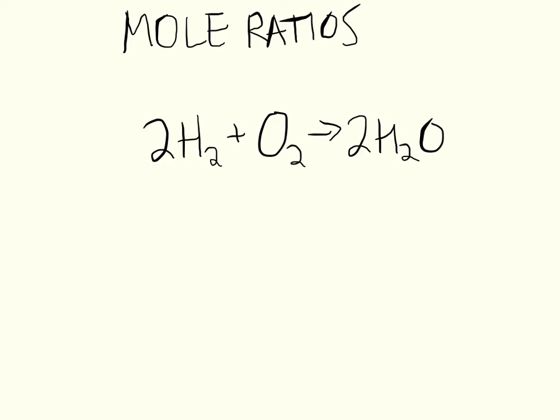In this chemical equation, we see that it takes two moles of hydrogen to react with one mole of O2. Remember when there's no coefficient, that's an invisible one. When two moles of hydrogen react with one mole of oxygen, you'll make two moles of H2O.